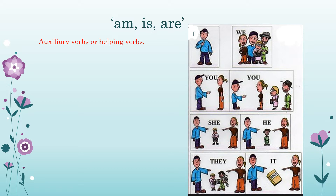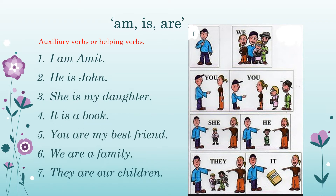Let us see these sentences with pronouns and these words. I am Amit. He is John. She is my daughter. It is a book. You are my best friend. We are a family. They are our children.